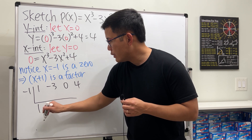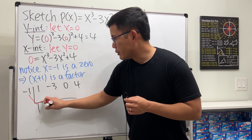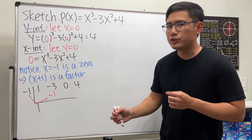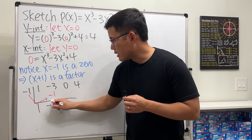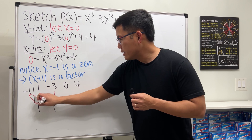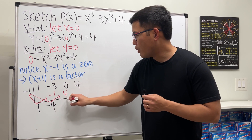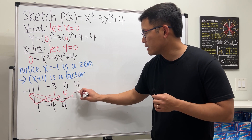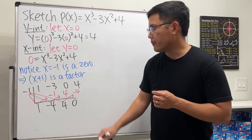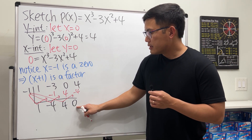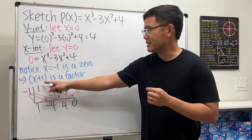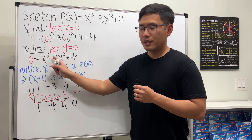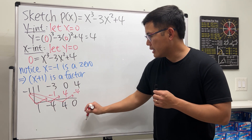Carry out the synthetic division: bring down 1, multiply by -1 to get -1, add to -3 to get -4, multiply by -1 to get 4, add to get 4 — wait, that's 0 for the x term — multiply -1 by 4 to get -4, add to 4, remainder is zero. Remainder zero confirms x + 1 is indeed a factor.